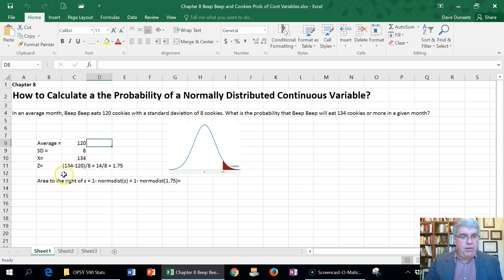So what we do is we use our Z formula for calculating the Z, which is X minus X bar divided by sigma, which is 134 minus 120. And that gives us 14 cookies. So we want to know the probability that he eats 14 more cookies than average when the standard deviation is 8. And so 14 divided by 8 comes to 1.75.